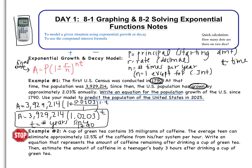So that's the first part. That's writing the equation. Now we need to predict the population of the United States in 2025. So we're going to use that model that we have. So I have A equals 3,929,214 multiplied by 1.0203 raised to the t power. Well, what's t? T is not 2025. Because remember, t is counting the years since 1790. So t in this case is going to be 2025 subtract 1790, which ends up being 235. So that's going to be my exponent.